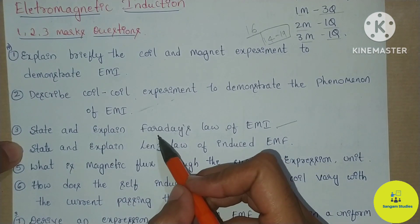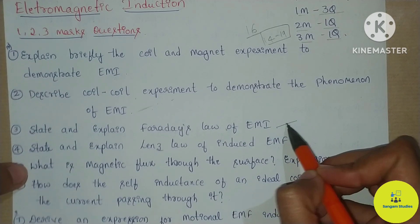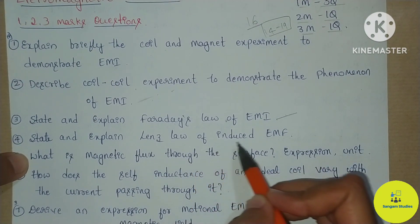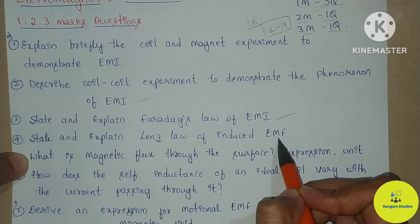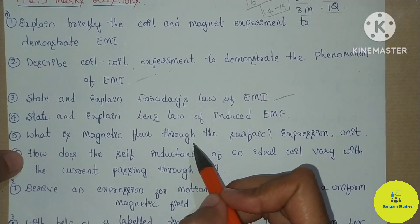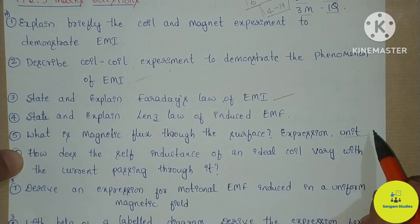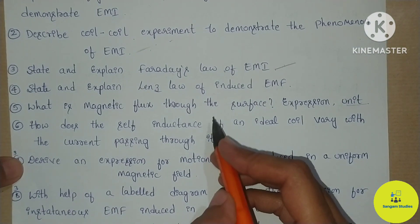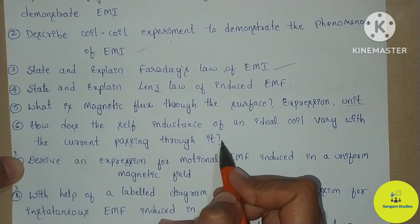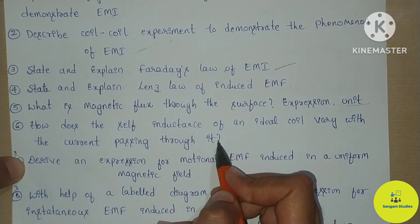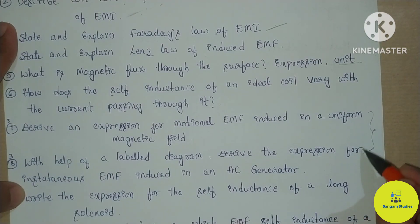The third question is to explain Faraday's law of EMI, which is 2 or 3 marks. You will have to explain the statement and the explanation. Next, what is magnetic flux through a surface? The expression and unit are asked — again 2 or 3 marks. How does the self-inductance of an ideal coil vary with the current passing through it? This is 2 or 3 marks and also appears as MCQs and fill-in-the-blanks.